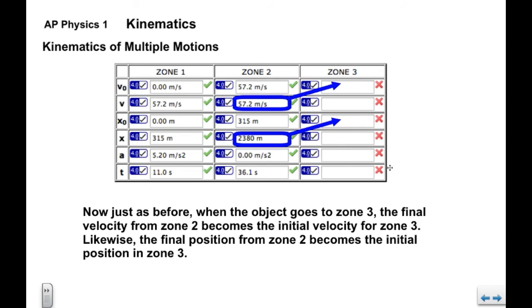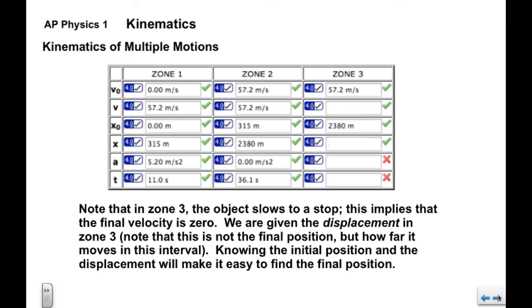Now when we go to Zone 3, once again, Zone 2 ends and Zone 3 begins. We're going to take the final velocity from Zone 2. That goes into the initial velocity for Zone 3. And the final position from Zone 2 becomes the initial position for Zone 3. So we put those in. We also know that in Zone 3 the object slows to a stop.